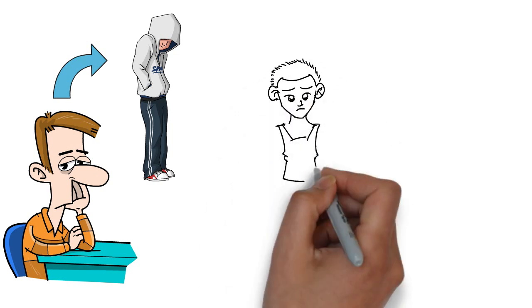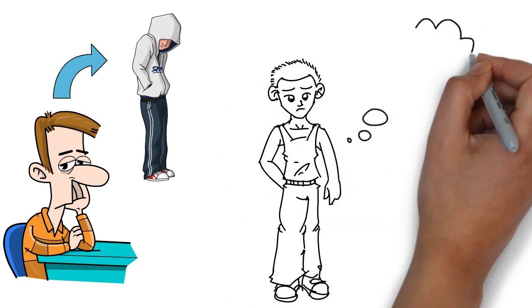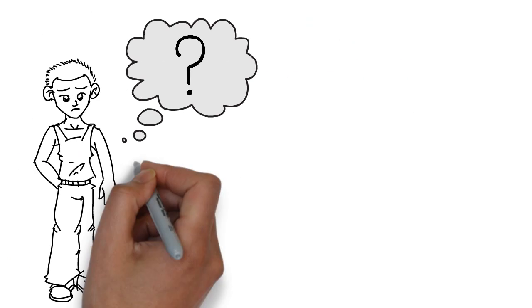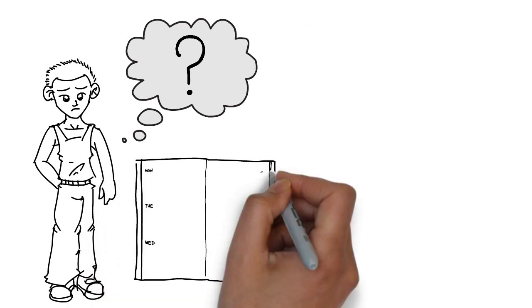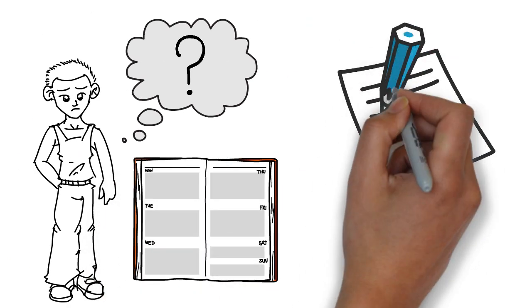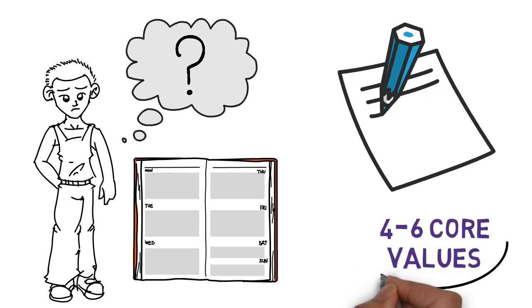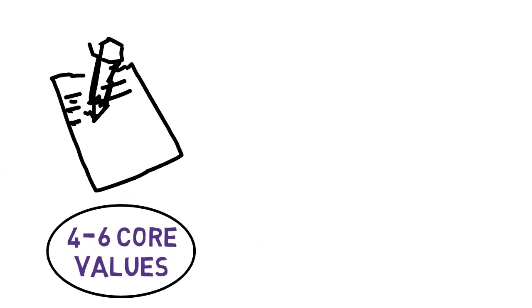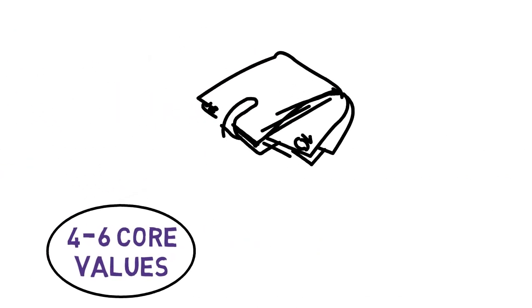So start thinking more about who you are, what your values are and what you stand for. And after you have given this a lot of thought, take a piece of paper and write down 4 to 6 core values that you want to live by. Fold that paper and put it in your wallet.